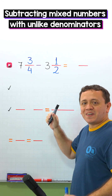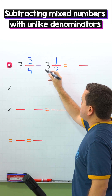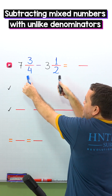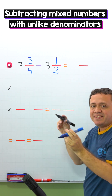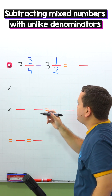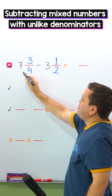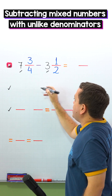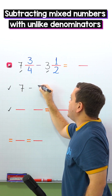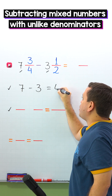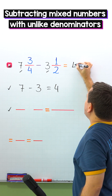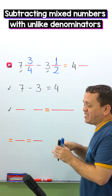Let's move on to another example. In this example, we're going to subtract 7 and 3 fourths minus 3 and 1 half. These mixed numbers have different denominators. To find the difference, we just need to follow the same steps. We'll start by subtracting the whole numbers: 7 and 3. 7 minus 3 gives us 4. Next, we put 4 in the answer. We have the difference of the whole numbers.